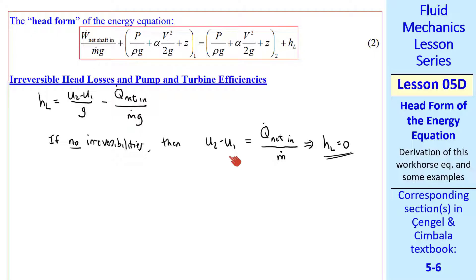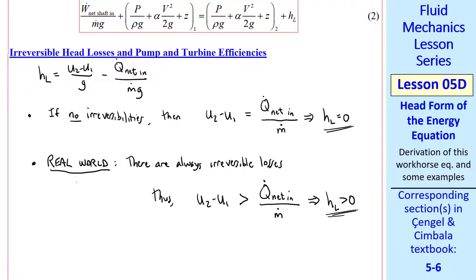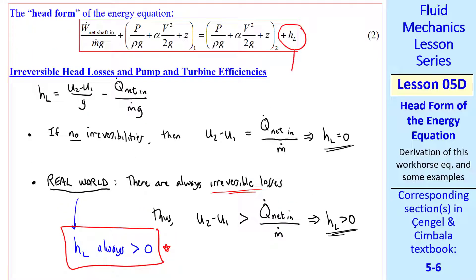Physically, the internal energy rise in the fluid is due only to heat transfer. But in the real world, there are always irreversible losses. Thus, the actual rise in internal energy is greater than the rise due to heat transfer into the fluid. Again, from this equation, that means HL is greater than zero. Since we live in the real world, HL is always greater than zero. There are always irreversible losses. If there weren't, you'd be violating the second law of thermodynamics, which you never want to do, by the way. These irreversible losses are accounted for in this HL term in equation two.